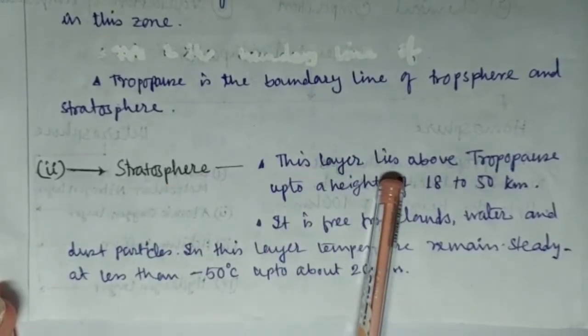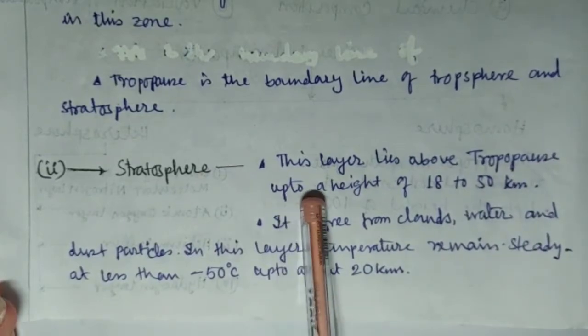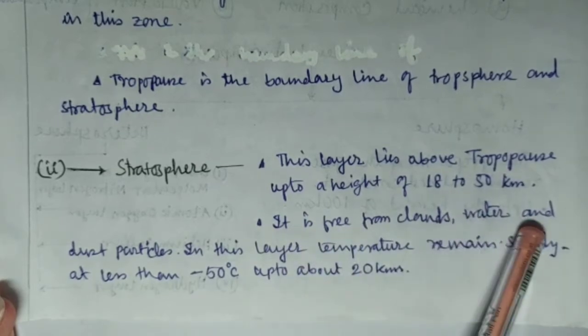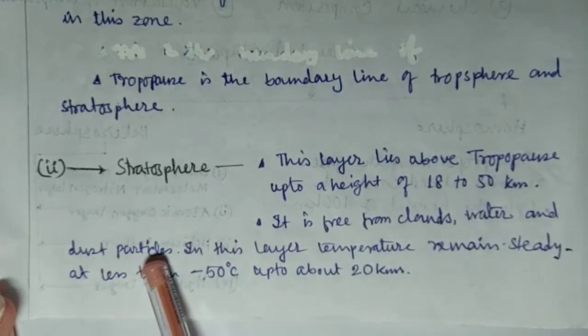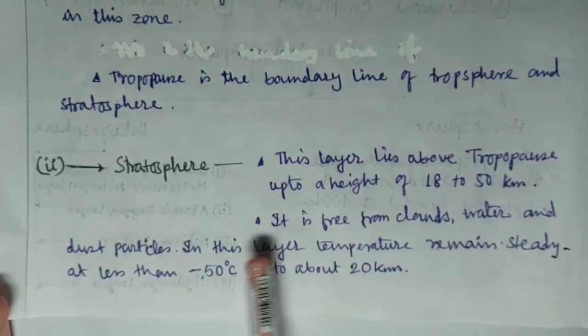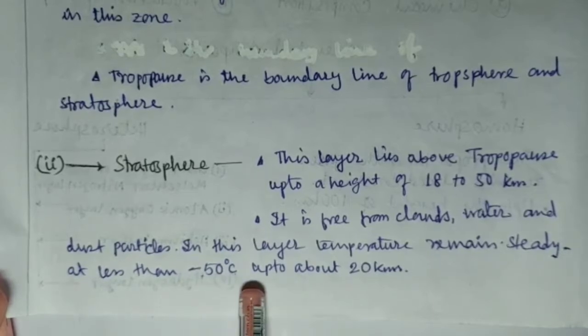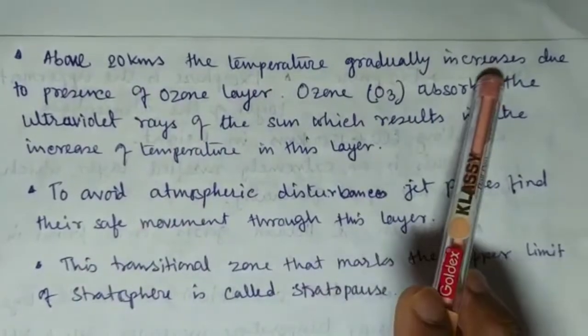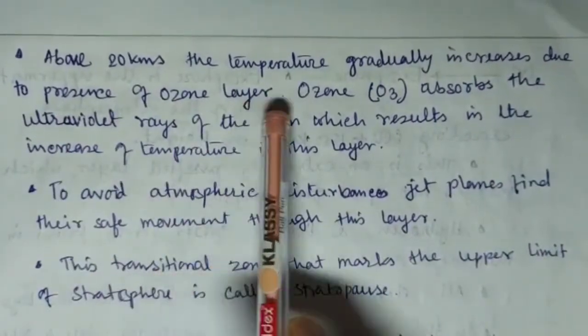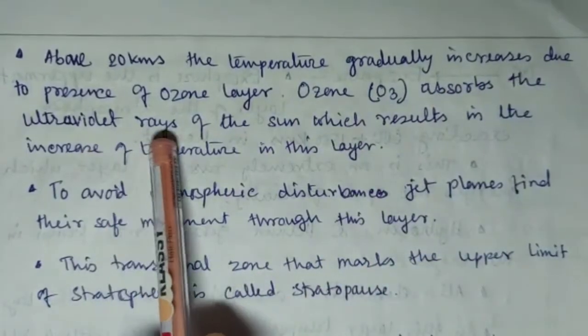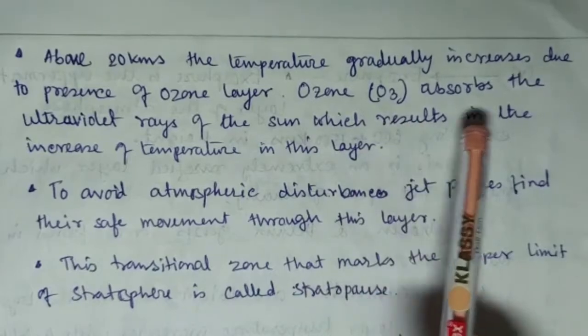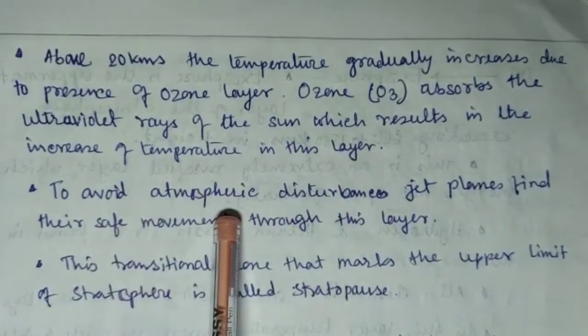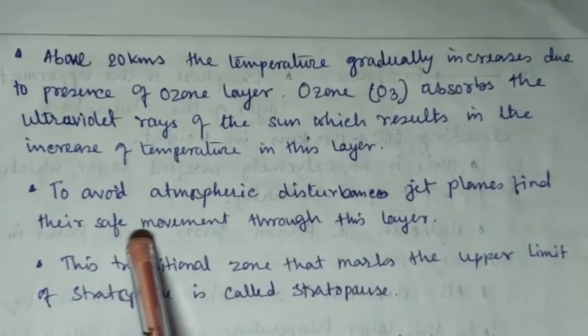Stratosphere: This layer lies above tropopause up to a height of 18 to 50 kilometer. It is free from clouds, water and dust particles. In this layer, temperature remains steady at less than minus 50 degree centigrade up to about 20 kilometer. About 20 kilometer, the temperature gradually increases due to presence of ozone layer. Ozone absorbs the ultraviolet rays of the sunlight which result in the increase of temperature in this layer. To avoid atmospheric disturbances, jet planes find their safe movement through this layer.